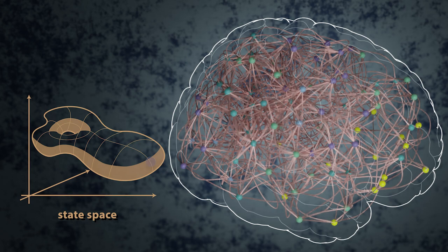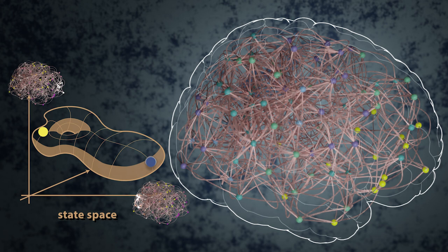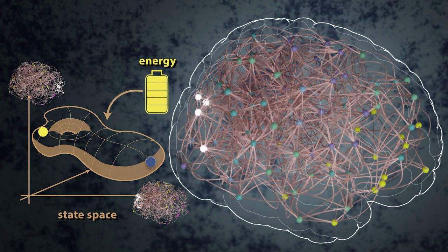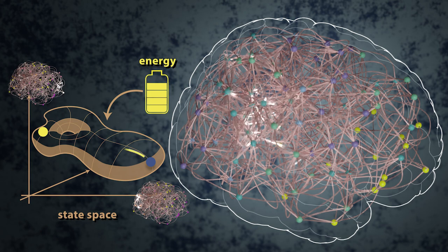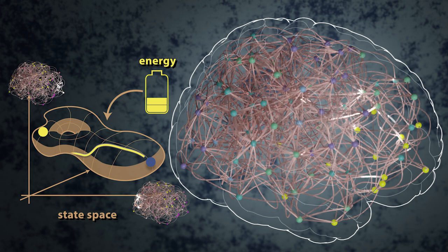Additionally, using a framework called Network Control Theory, we can sample a pair of points from this manifold and ask whether we can control the brain to transition between the associated states. We do this by modeling the control inputs that need to be delivered to the nodes of the network to drive the brain through the state space from an initial to a target state.